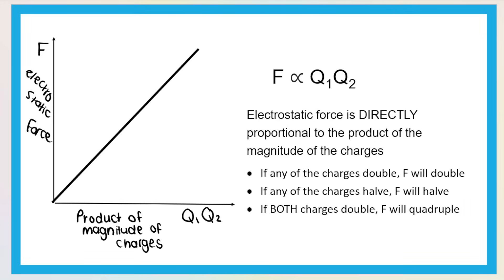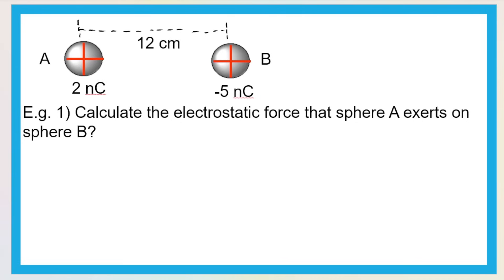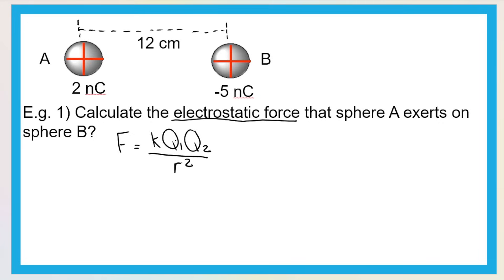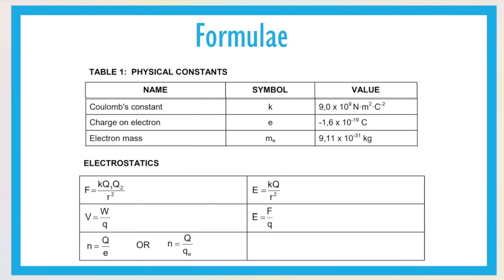Let's jump into a question to see how we use the formula. The question says: calculate the electrostatic force that sphere A exerts on sphere B. As soon as you see 'calculate electrostatic force that one object exerts on another,' we know to use Coulomb's Law. Always write the blank formula first — you get a mark for writing the formula as given on the formula sheet. Then you get marks for substitution. K is a constant, always given on the formula sheet.